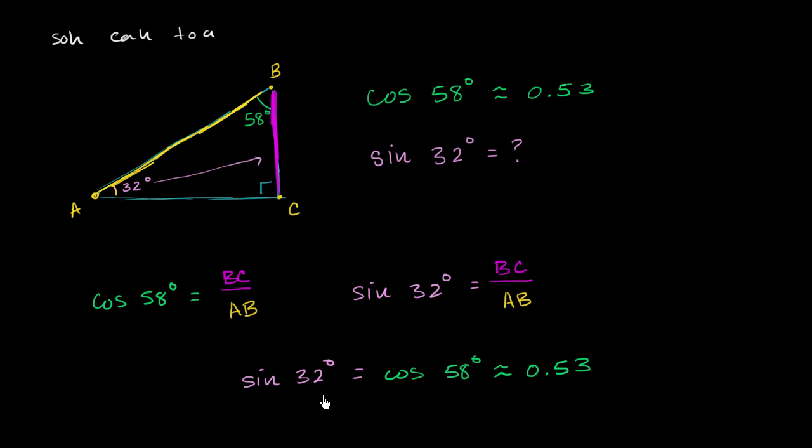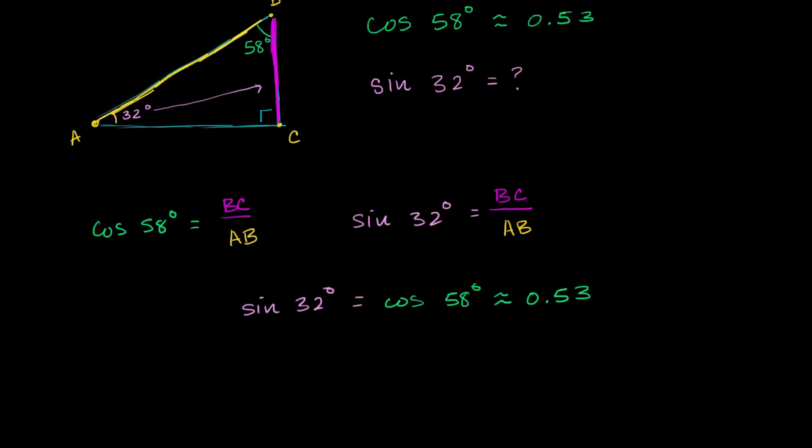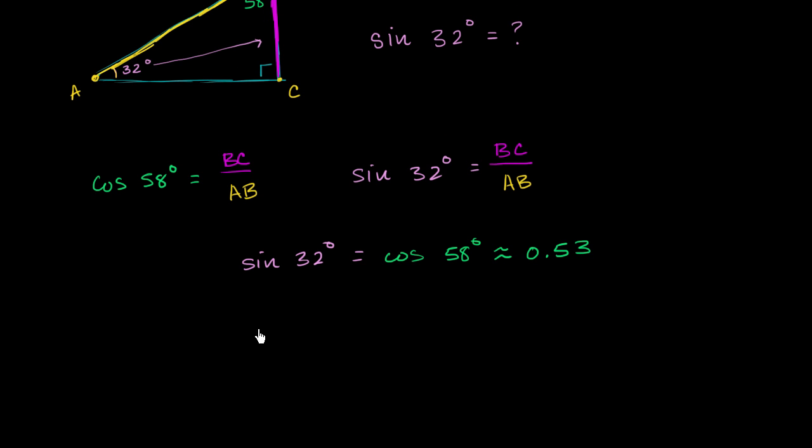And this is a really, really useful property. The sine of an angle is equal to the cosine of its complement. So we could write this in general terms. We could write that the sine of some angle theta is equal to the cosine of its complement, is equal to the cosine of 90 minus theta. Think about it.